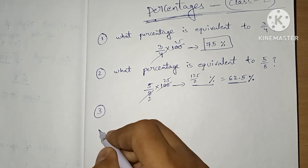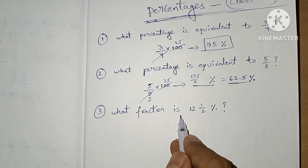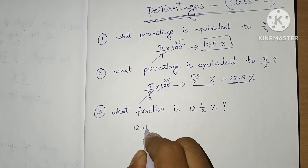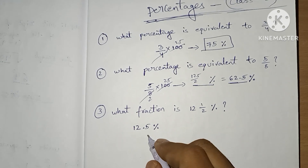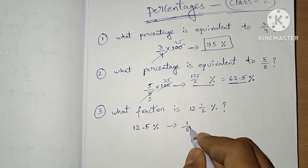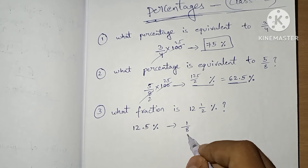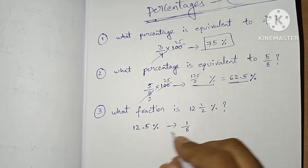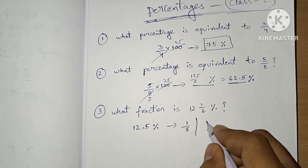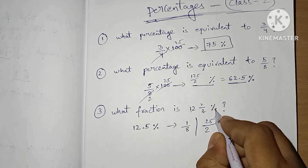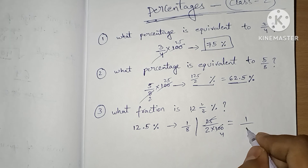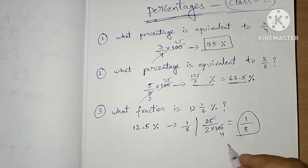Next, third question: What fraction is 12 and a half percent? 12.5% is nothing but 1/8. Yesterday we already learned the percentages to fractions table, and 12.5% is 1/8. In the basic method, 12.5 divided by 100 gives 25/200, which simplifies to 1/8. So 1/8 is our answer.